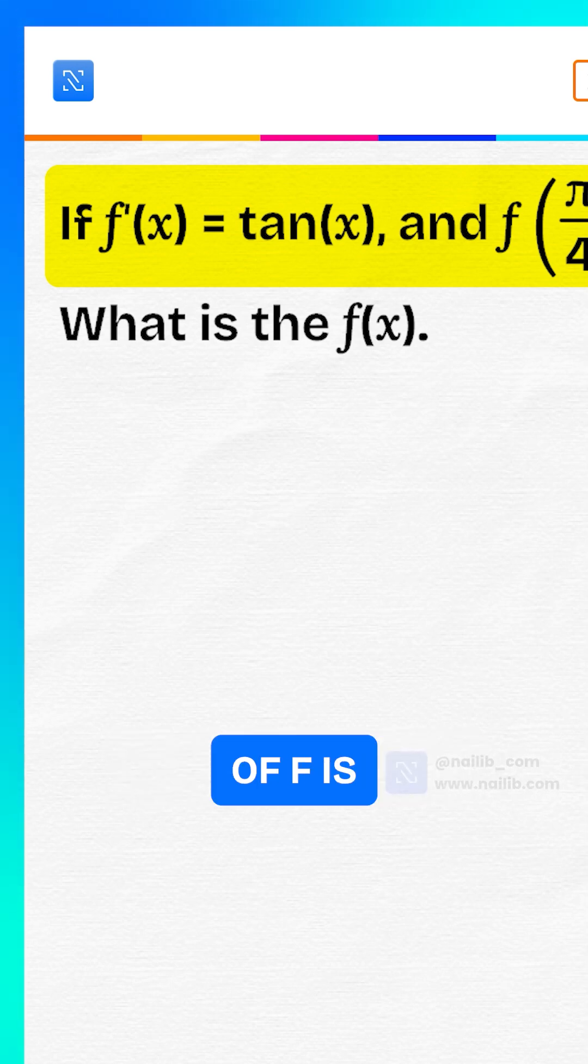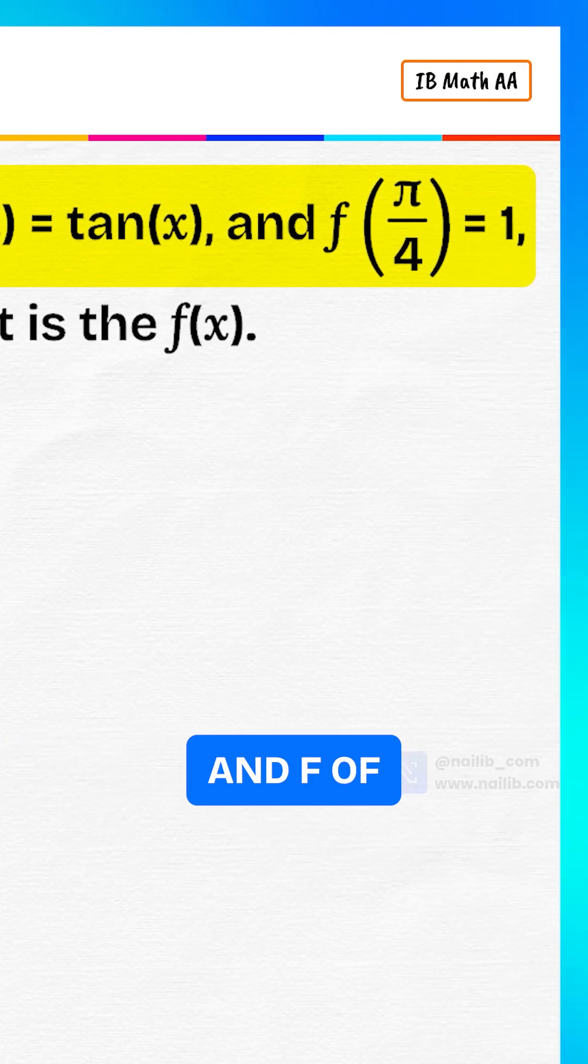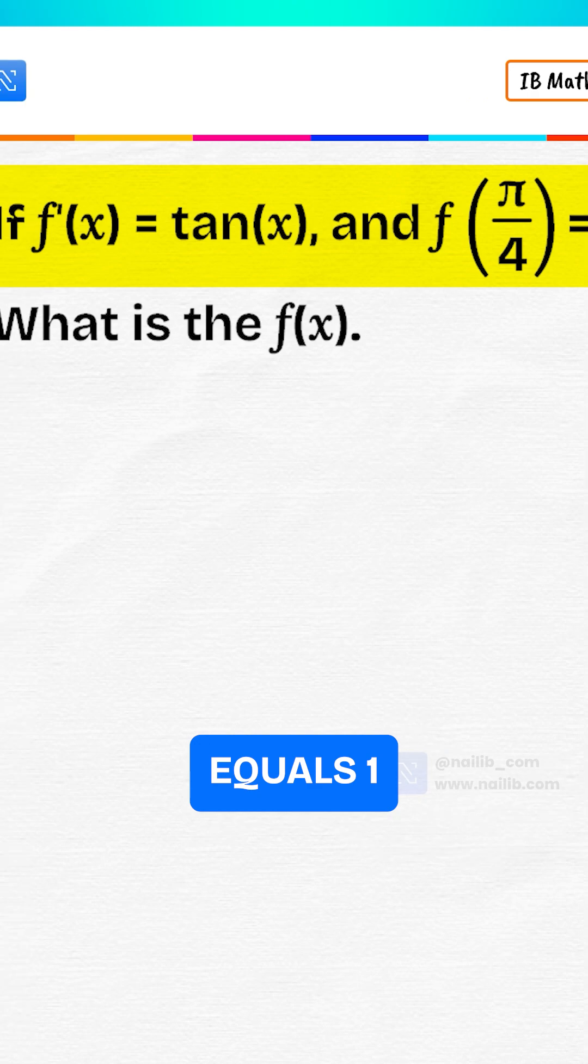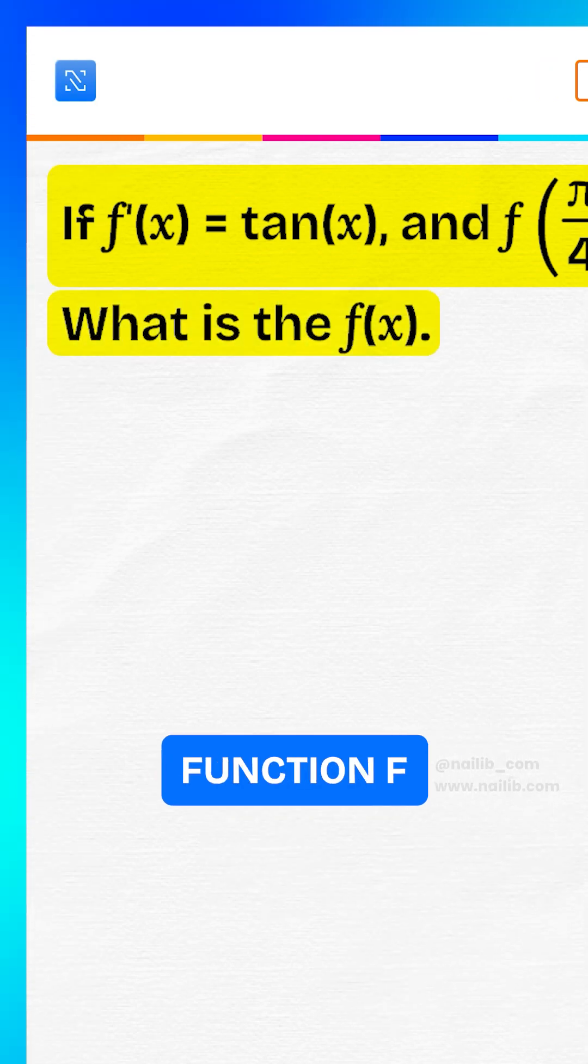If the derivative of f is tangent x and f of pi over 4 equals 1, what is the original function f of x?